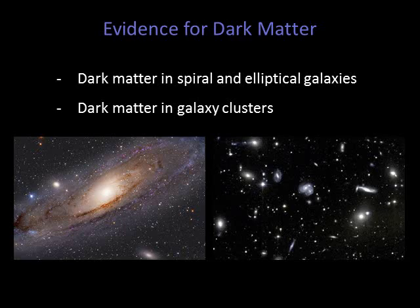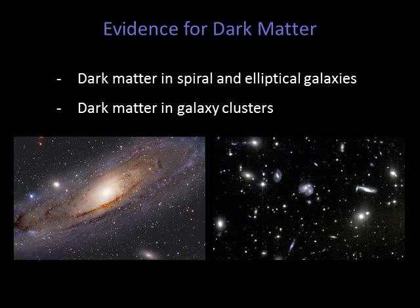There is currently ample scientific evidence to support the existence of dark matter. I'm going to describe the observations that provide this evidence, and what these observations can tell us about the nature of dark matter. We'll see we have evidence for dark matter in our own Milky Way, as well as in other spiral galaxies. Astronomers also have data from elliptical galaxies that is consistent with dark matter. On a larger scale, observations of galaxy clusters imply there are large amounts of dark matter within clusters.